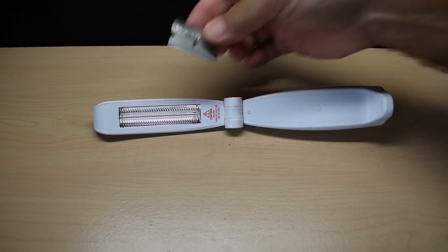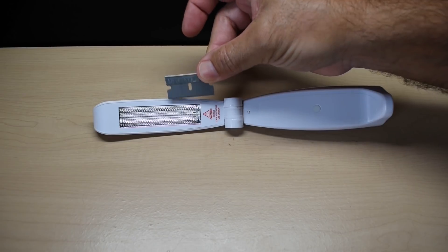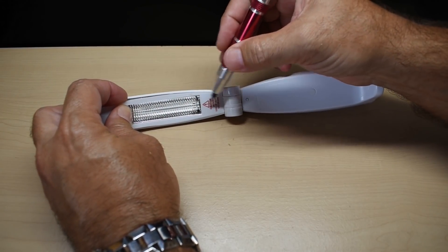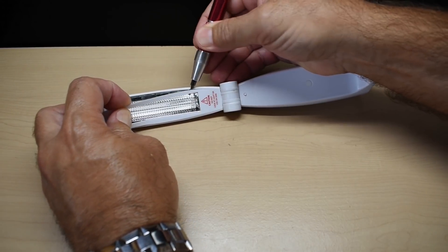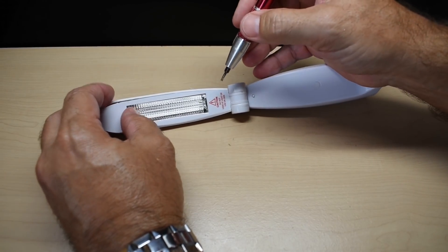You can also take a single edge razor blade, insert it into that space, and very carefully pop it off. You want to be very careful not to crack the plastic down here. I'm going to be reusing that. And also be very careful you do not hit that tube and damage the tube.